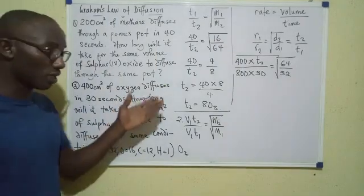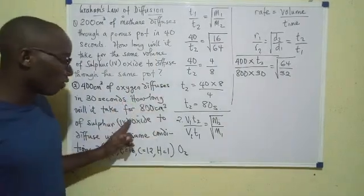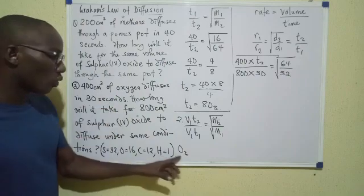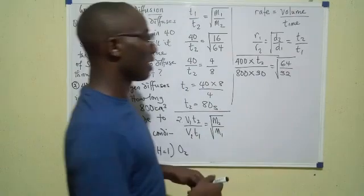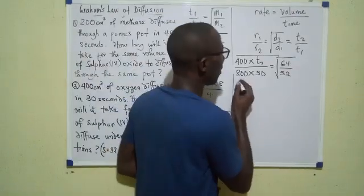In the previous question, we saw the mass of SO2, sulfur(IV) oxide is 64. But in the case of oxygen, oxygen is O2, the oxygen molecule, and its mass is 32.